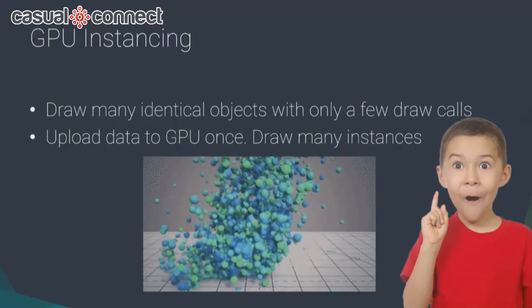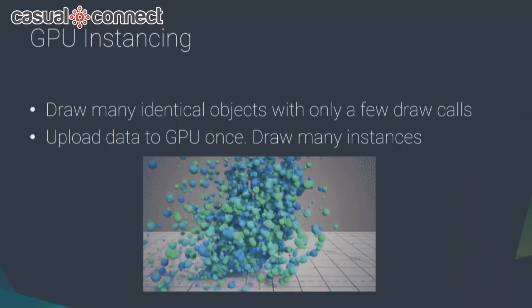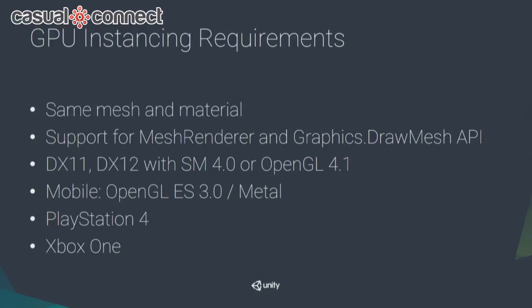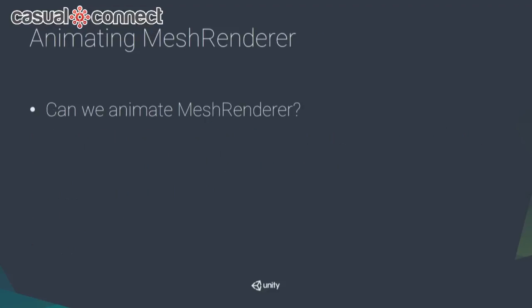But GPU instancing has requirements. Most modern hardware isn't a problem, but critically it supports mesh renderers — not skinned mesh renderers. Since we need animated characters, this won't work directly. So is there a way to work around this limitation and animate mesh renderers instead?